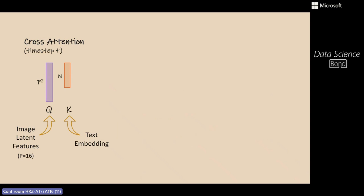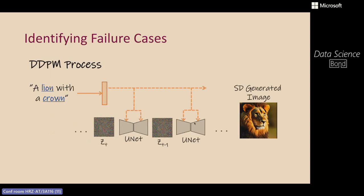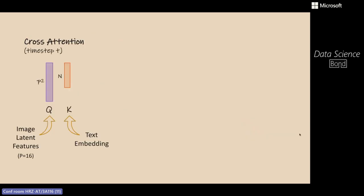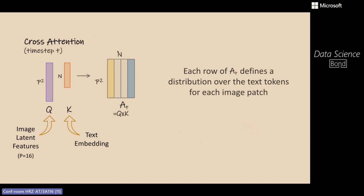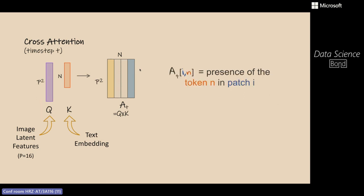The cross-attention mechanism creates an attention map — a matrix where for each patch in the image, we have an attention value for each token in the sentence. For 'a lion with a crown,' these attention values determine which token is generated in which patch of the image. So the attention values tell us what the model generates and where. Each column of the attention matrix corresponds to a single token and can be reshaped into a spatial map showing attention values for that token across the entire image.